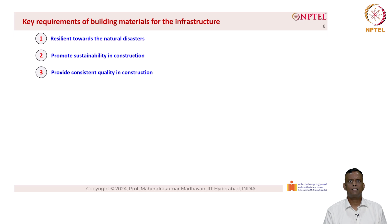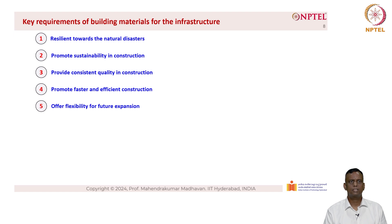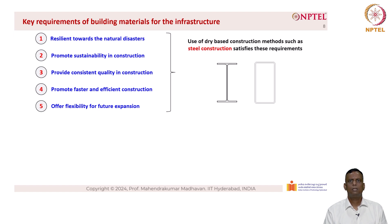The next requirements are to provide consistent quality in construction, promote faster and more efficient construction, and offer flexibility for future expansion. These are among the five key requirements for selecting a building material in the future. This leads to the use of dry-based construction methods such as steel construction, which satisfies these requirements.